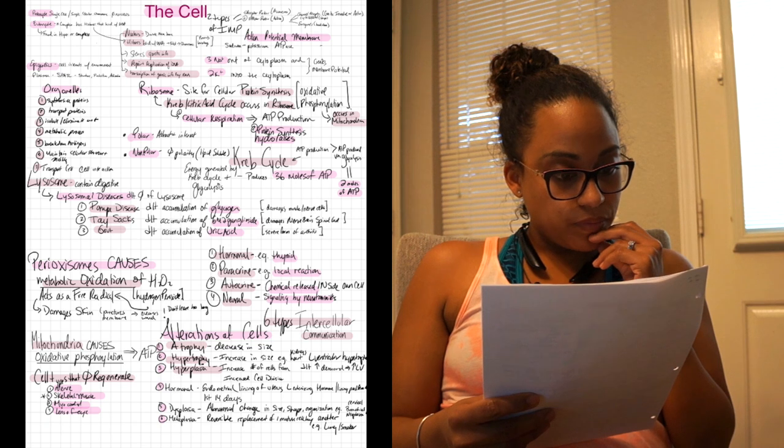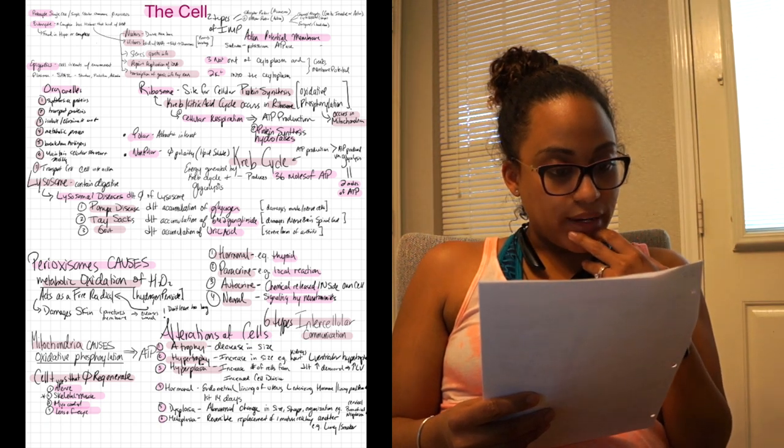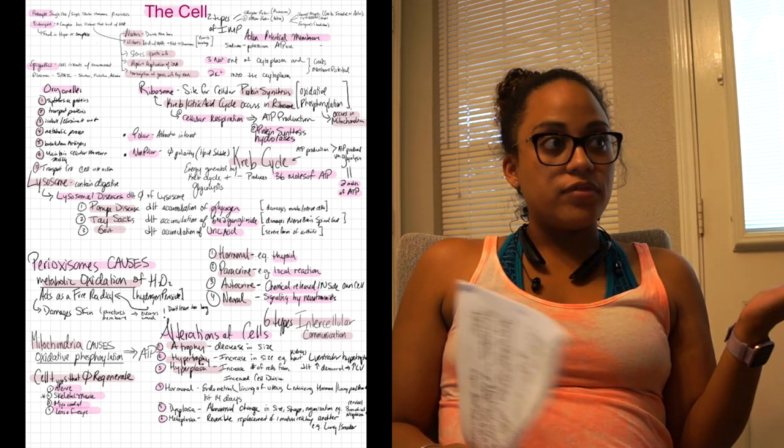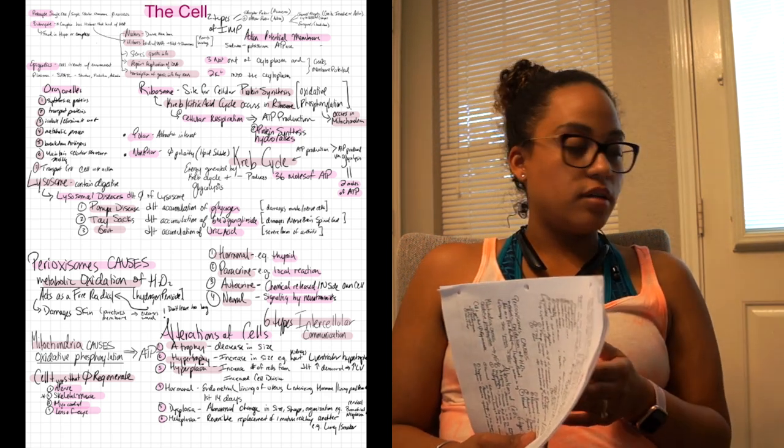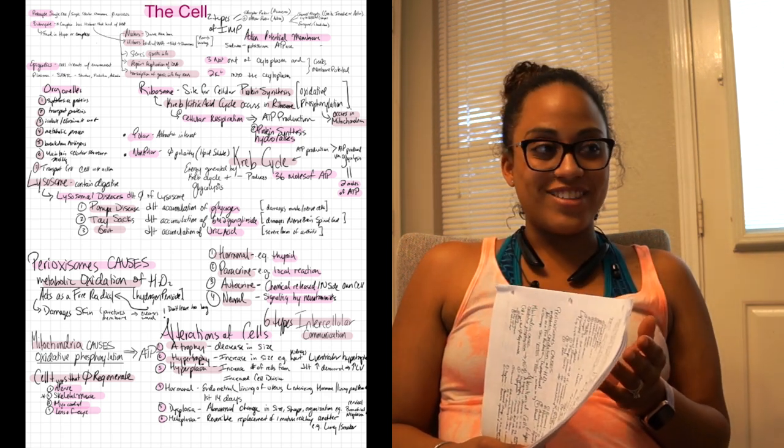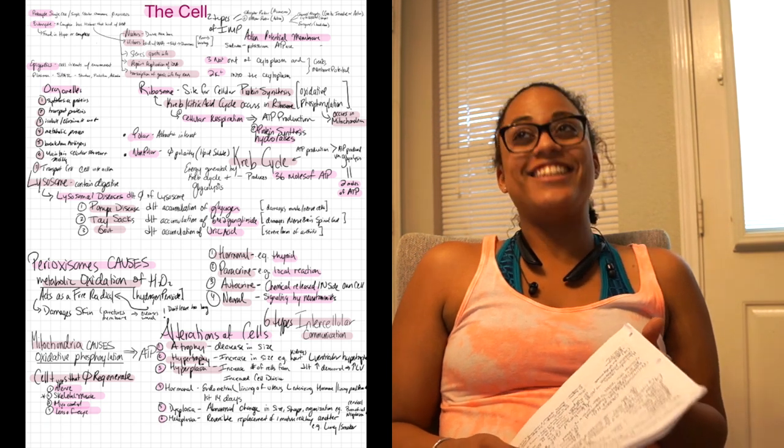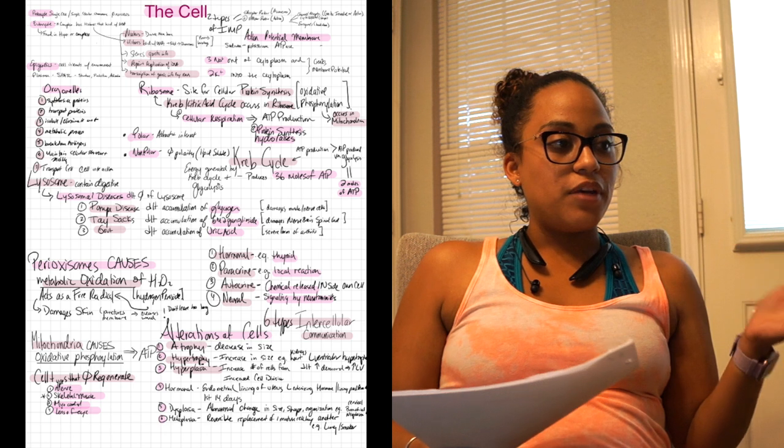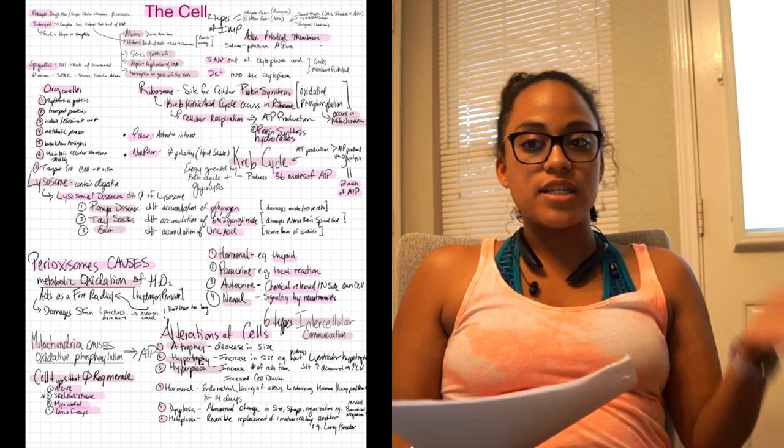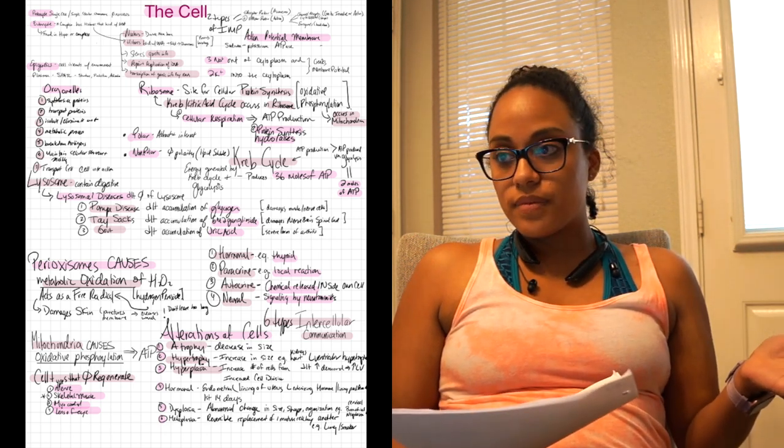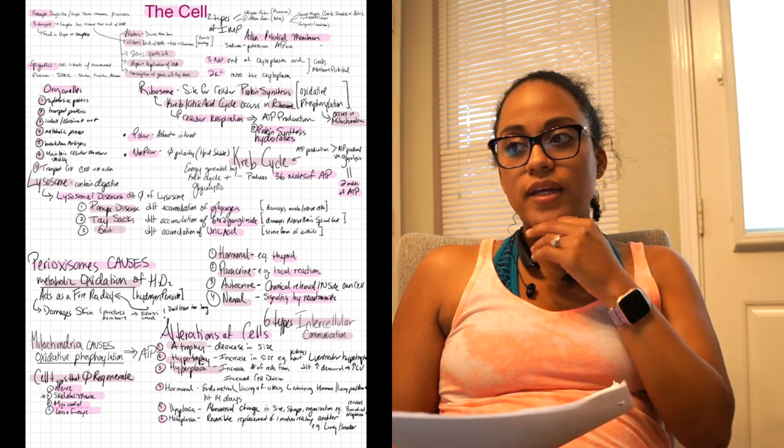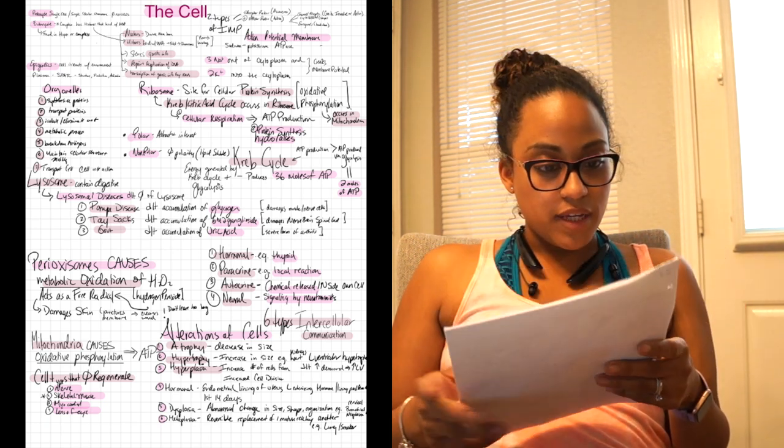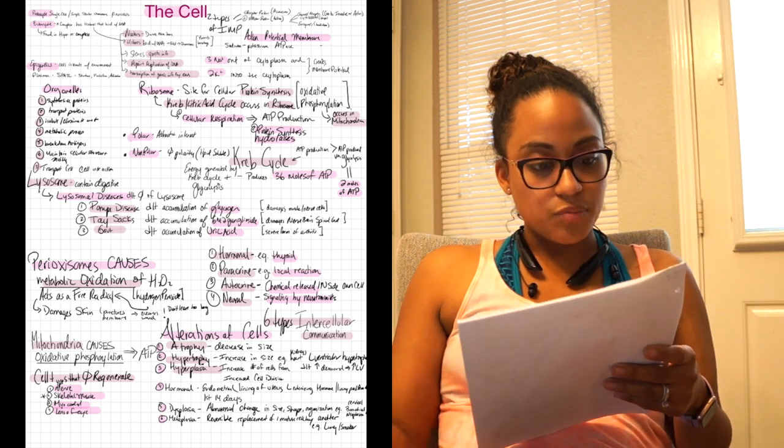In the plasma membrane it has five different functions. He's growling at me. I remember SPATSY: S for structure, P for protection, A for activation, T for transportation I believe, and then C is for cell to cell communication.